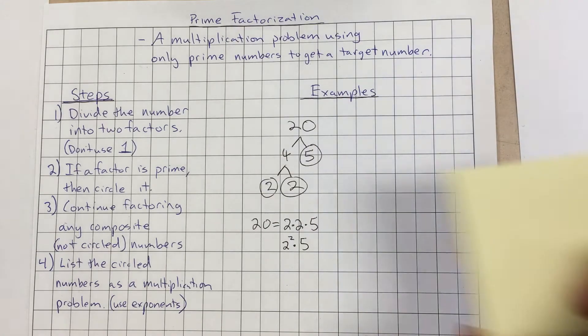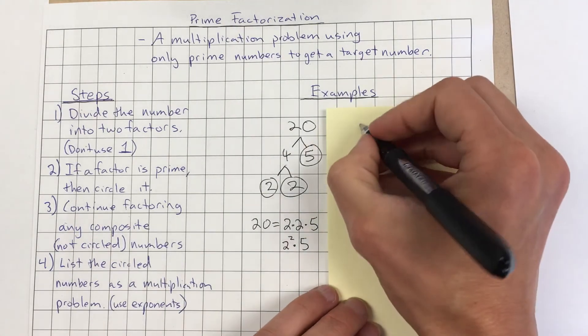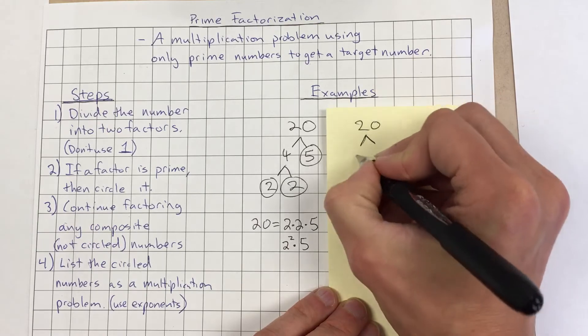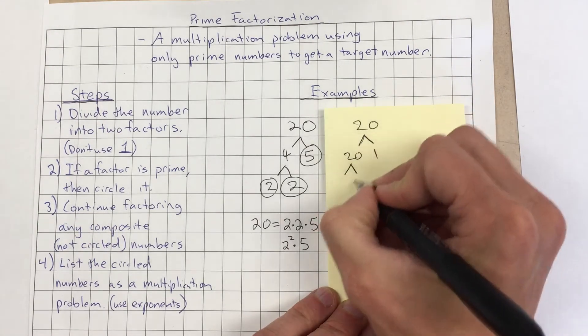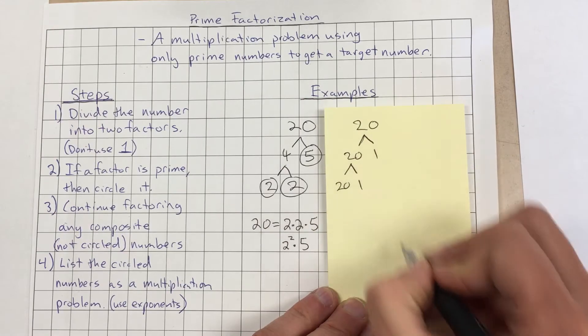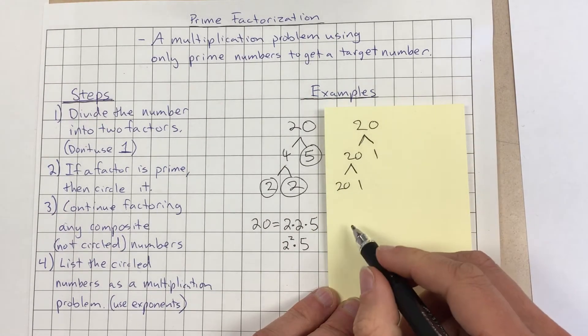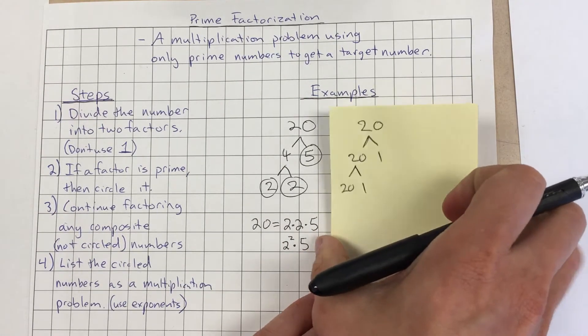Now the reason we don't want to use 1 is if we were to split something up, so for instance, 20 and 1. Those are prime. Then we keep going. Then we're still kind of where we came from. We're not really getting smaller. So we want to use a different pair of factors other than 1.